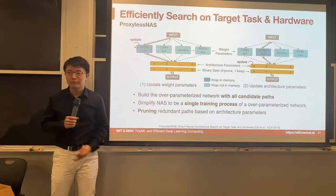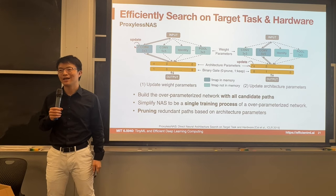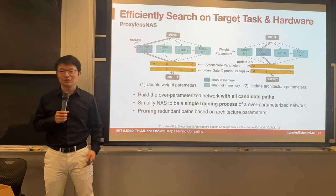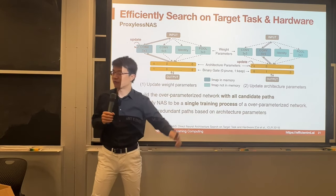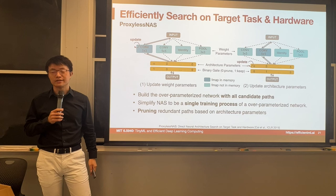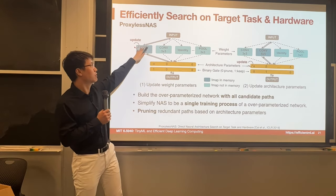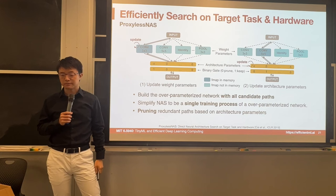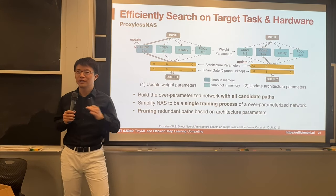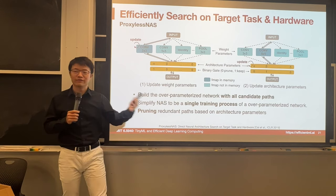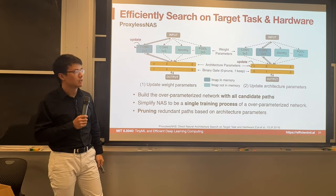We propose ProxylessNAS: rather than relying on proxy tasks with small datasets, small architecture spaces, few training epochs, or FLOPs as proxies, we directly train on ImageNet, unlock all layers directly, and use latency rather than FLOPs as feedback. We first build an over-parameterized network containing many different choices — much wider, much deeper — with all candidates in the design space: 3×3 conv, 5×5, identity, etc. This is an over-parameterized network with all candidate paths. We want to simplify training into a single process compared to repeatedly training and evaluating individual models.